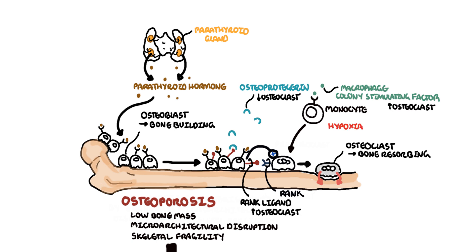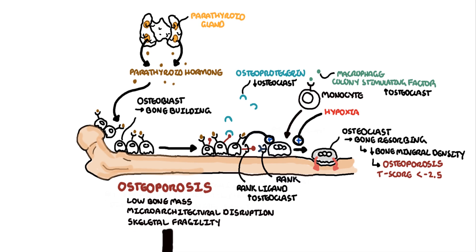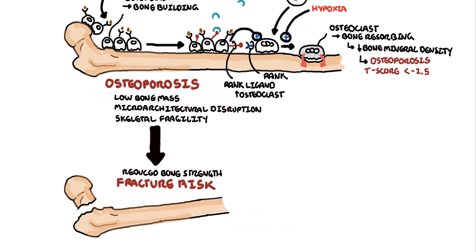Osteoclast formation is boosted strongly by hypoxia as well. An increase in osteoclastic activity means bone breakdown, and this is termed bone resorption. Increased bone resorption means reduced bone mineral density. By the time it gets to a certain stage, the low bone mineral density is termed osteoporosis, characterized by a T-score less than negative 2.5. A T-score describes how dense your bones are, usually measured at your spine or hip. A T-score less than negative 2.5 is diagnostic of osteoporosis.